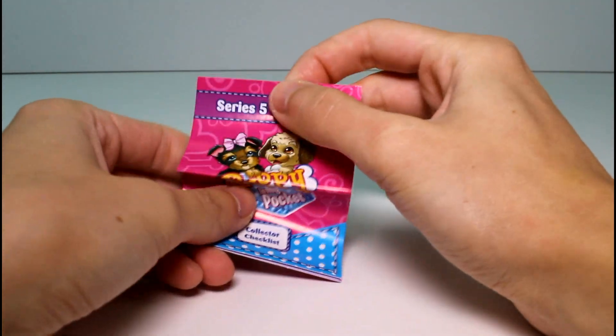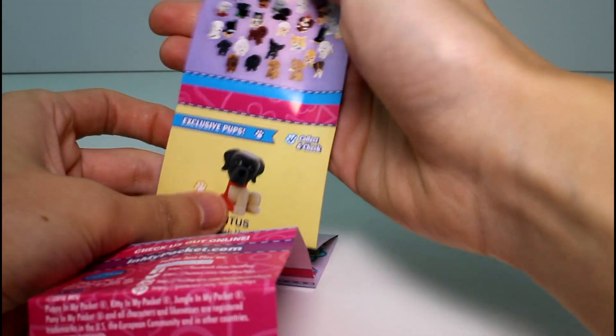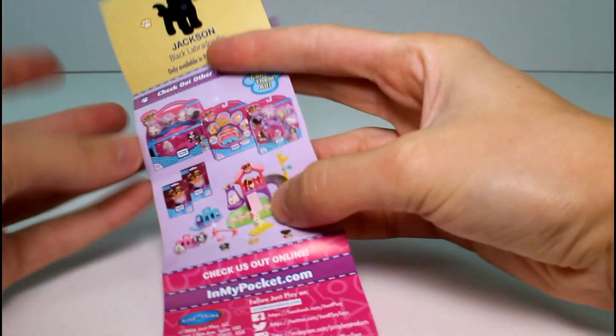Okay guys, this is part of series five so I was right. This one is new. Let's see. These are all the ones you can get in the blind packs. There's the exclusive ones and then here's the play sets.